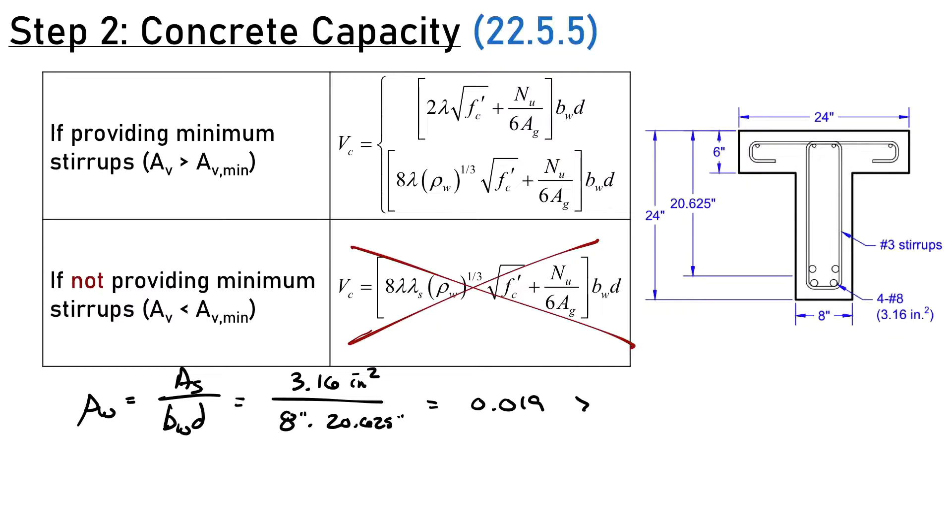Since 0.019 is greater than 0.0156, the second equation is going to control and give me a larger capacity. The only thing I'll note is there's a term NU for axial force, which is zero for this problem, so we get rid of that term. Calculating VC: 8 times lambda 1 times 0.019 to the one-third power, times the square root of 4000 psi, times 8 inches times 20.625 inches equals 22.3 kips. That's my concrete capacity going forward.